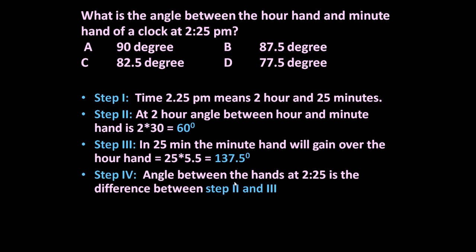Step 4: The angle between the hands at 2:25 is the difference between step 2 and step 3. If we find the difference of these two, we will get the correct answer. So 137.5 minus 60 equals 77.5 degrees. This is the answer. At 2:25 PM, the angle between the hour hand and minute hand will be 77.5 degrees.